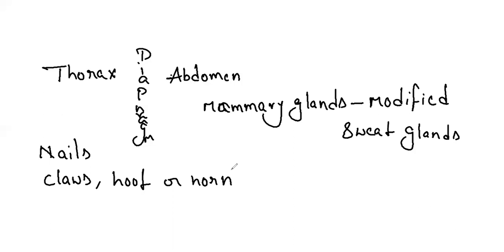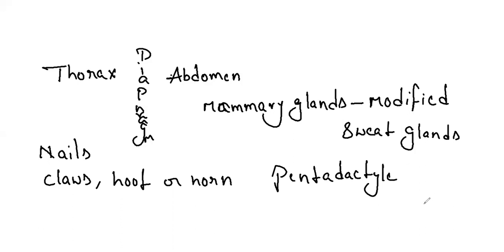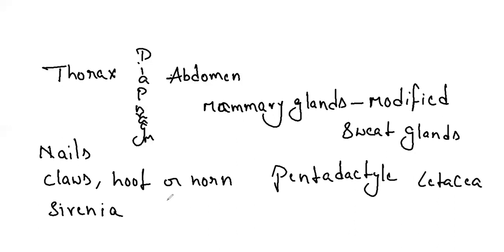Two pairs of limbs are present in the trunk. Limbs are pentadactyl, helping in swimming, walking, and running. Hind limbs are absent in Cetacea (whales) and Sirenia. The alimentary canal is complete, and anus and urino-genital apertures are separate — no cloaca — except in prototherians such as duckbill platypus and echidna.